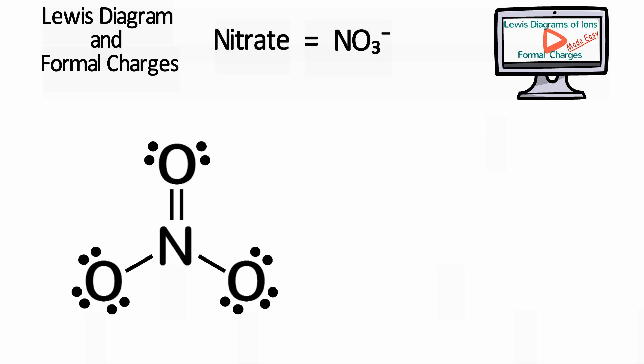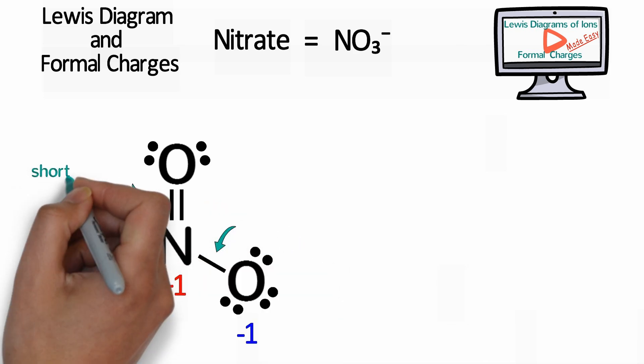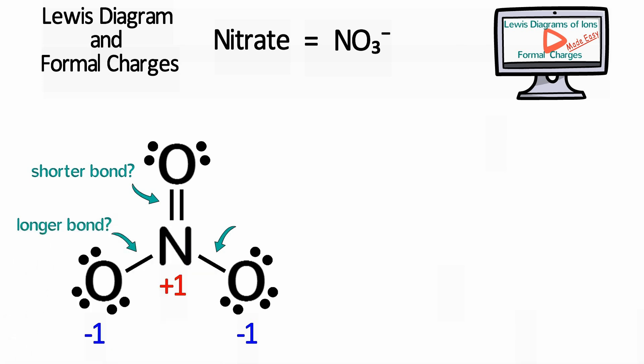It doesn't matter exactly where you drew the double and single bonds as long as you have one double bond and two single bonds. The single bonded oxygens would both have a negative 1 formal charge and the nitrogen would have a positive 1 formal charge. Now, if this were the actual structure of nitrate, we would expect two different NO bond lengths, one shorter and two longer.